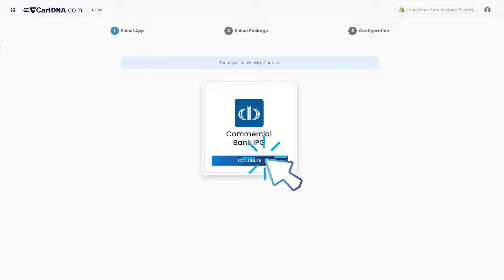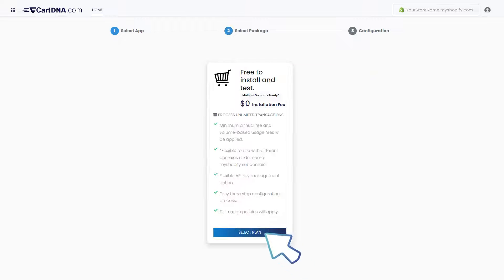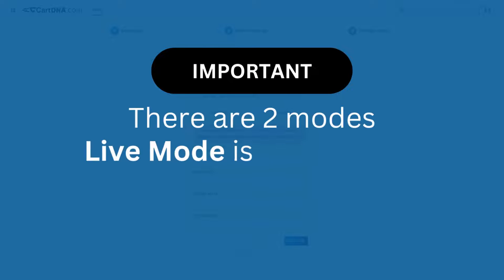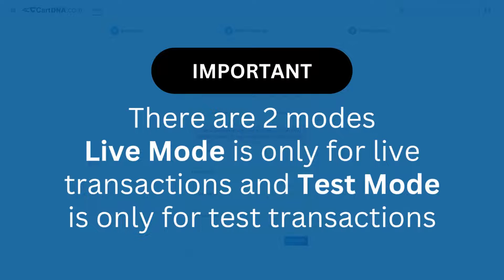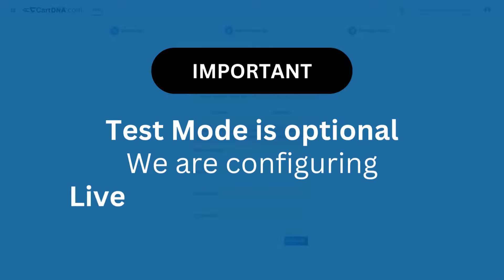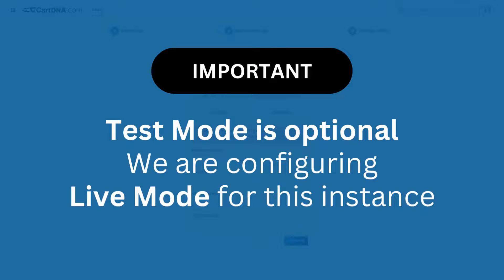Click on the continue button to go to the next step, then click on the select plan button. Important: there are two modes — live mode is only for live transactions and test mode is only for test transactions. Test mode is optional; we are configuring live mode for this instance.